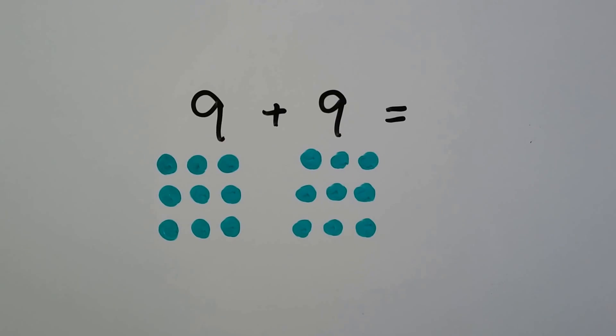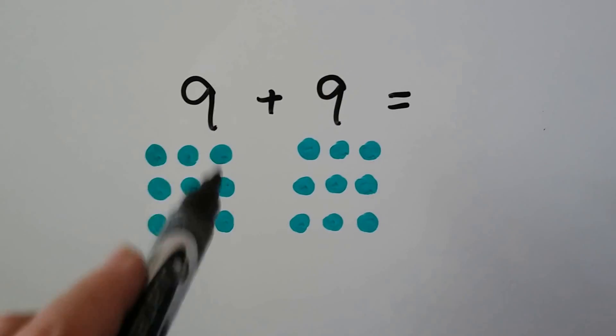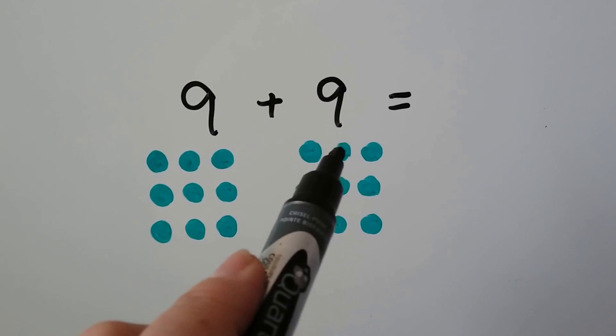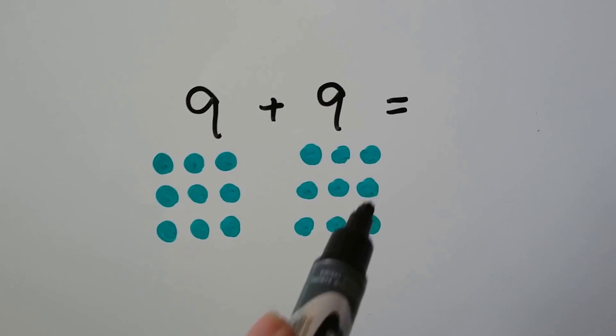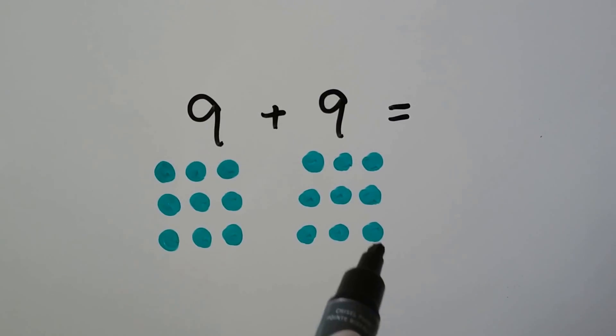Double nines. That's nine plus nine. We have nine, ten, eleven, twelve, thirteen, fourteen, fifteen, sixteen, seventeen, eighteen.